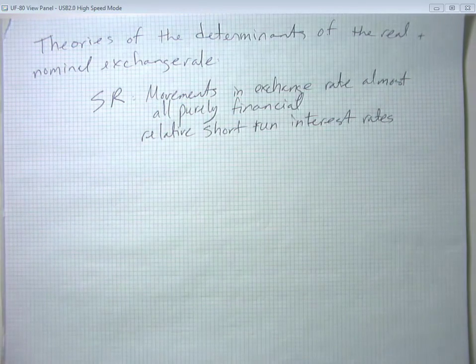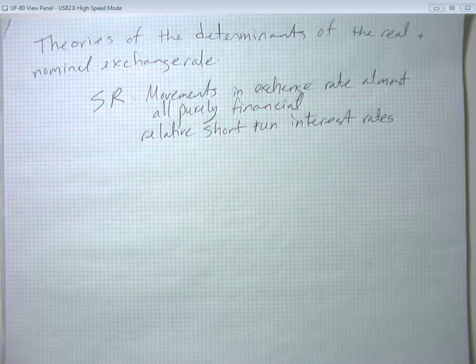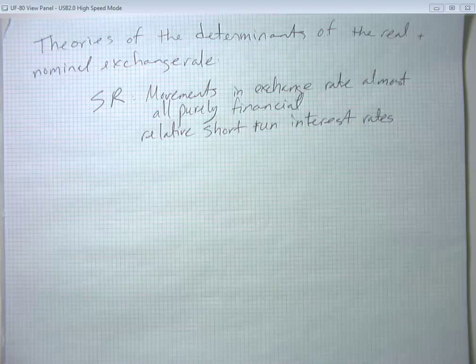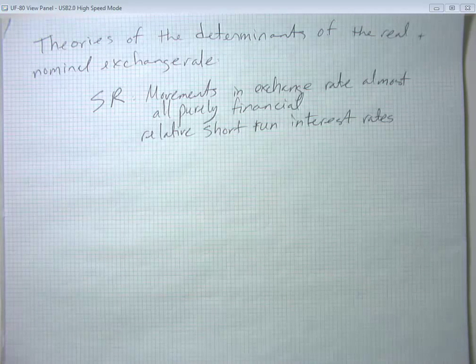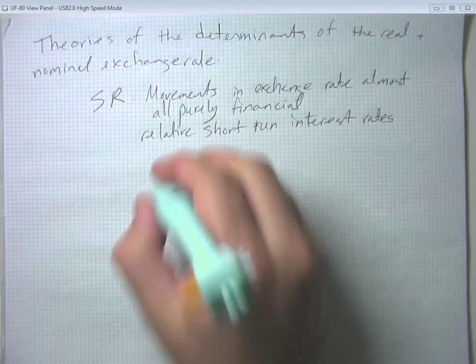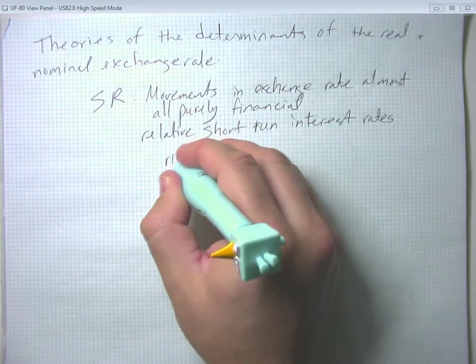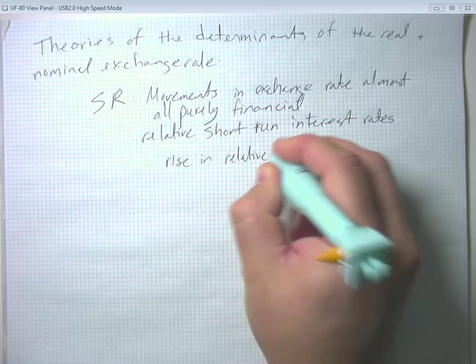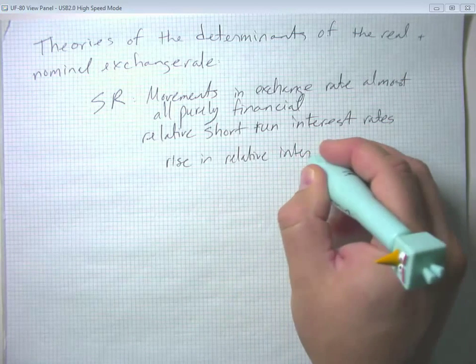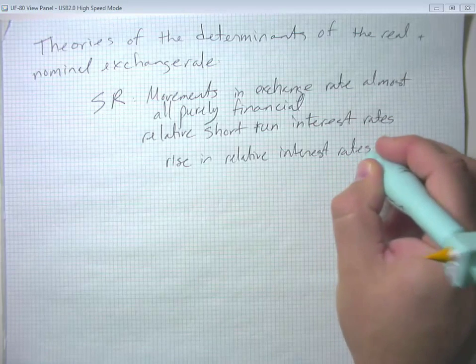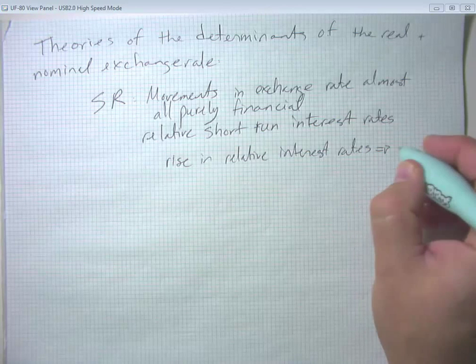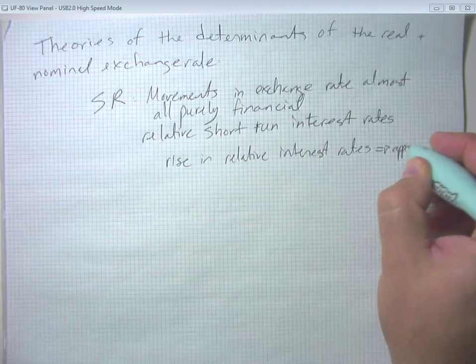So that if short run interest rates rise in the U.S. relative to some other country, then a bunch of investors are going to want to move some of their money into the U.S. dollar. And that's going to push the U.S. dollar up and so on and so forth. So a rise in a country's relative interest rates is often going to cause an appreciation of its currency.